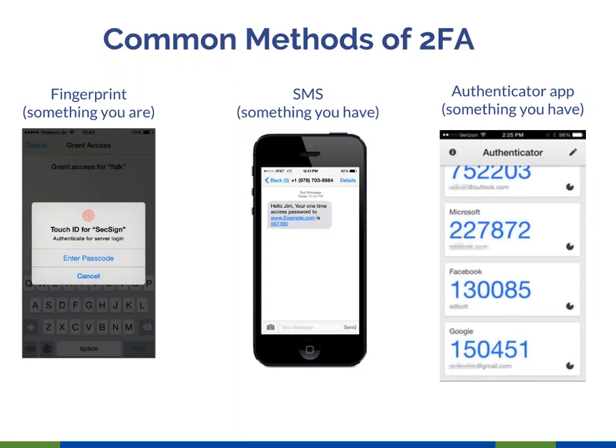Most common current methods of 2FA: fingerprint, as in Apple's Touch ID — using your finger to authenticate to apps on your phone. SMS — you register with a service and it texts you a six- or eight-digit code each time you try to log in, which you enter in addition to username and password. That's the 'something you have' factor — your mobile device.